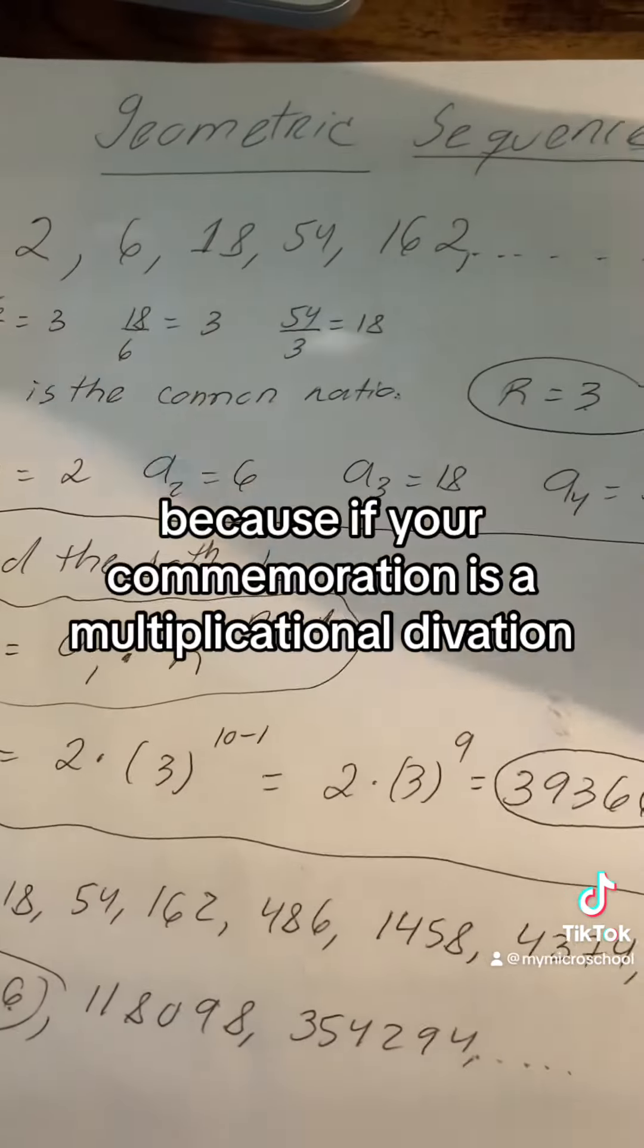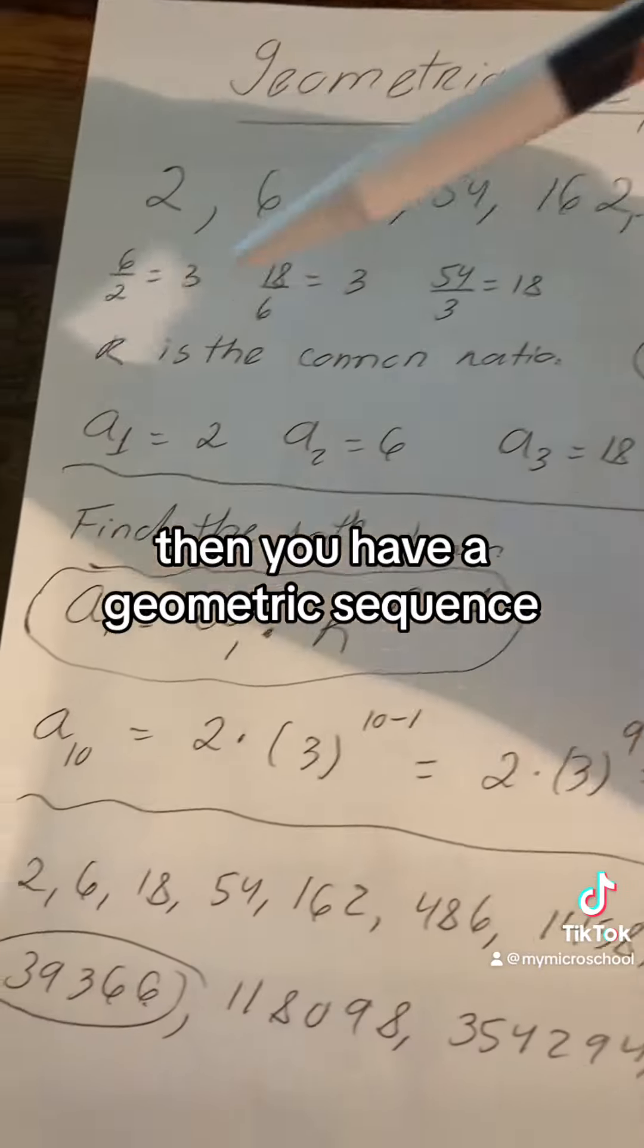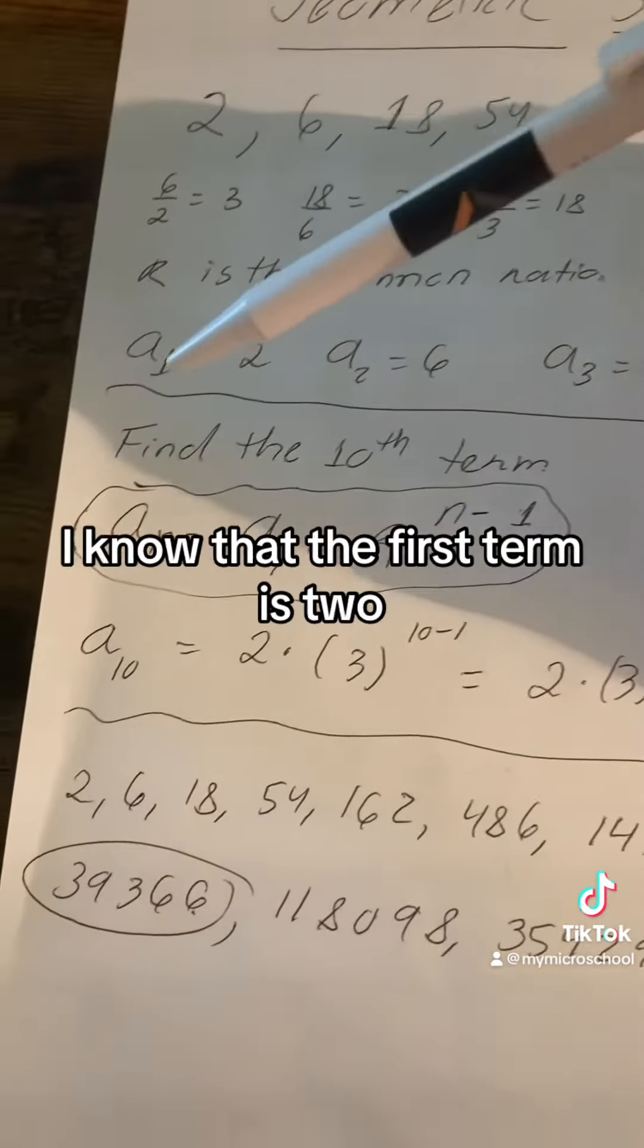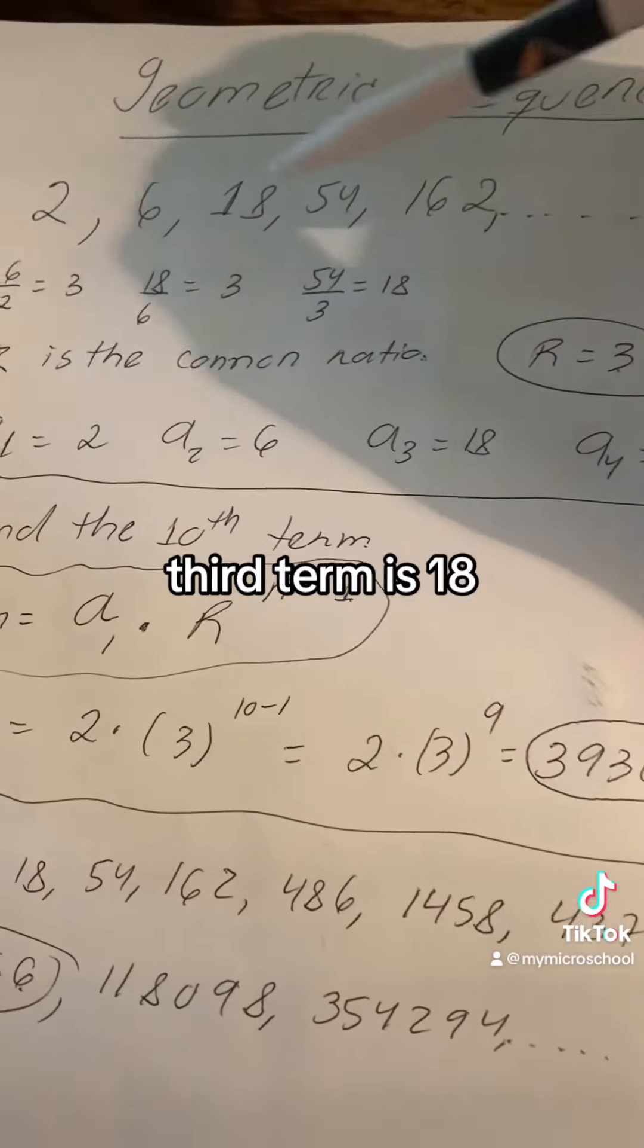Because of that, because your common ratio is a multiplication or division, then you have a geometric sequence. Because r is the common ratio, I know that the first term is 2, second term is 6, third term is 18, and so on.